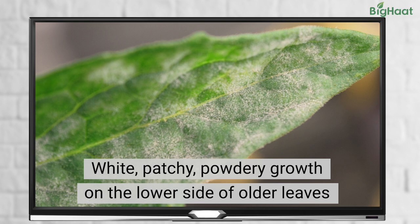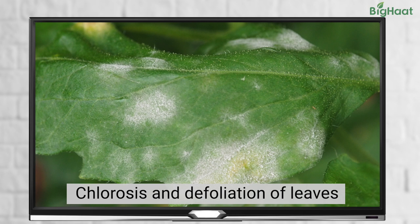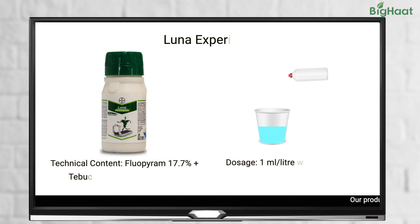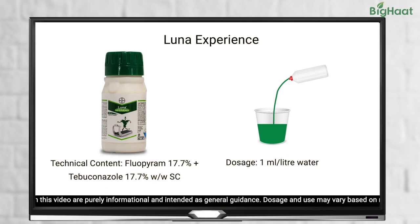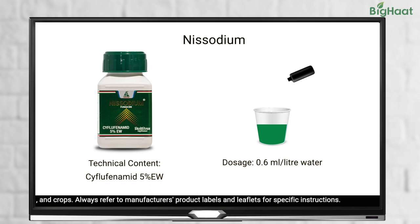Finally, we have powdery mildew. Infected tomato plants display patchy white powdery growth on the lower surface of older leaves, which can spread to both surfaces, leading to chlorosis and defoliation. To treat this disease, you can use Luna Experience at 1 ml per liter of water, Lizoleum at 0.6 ml per liter of water, or Nativo at 0.5 grams per liter of water.